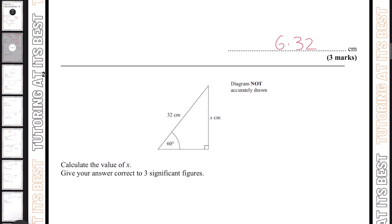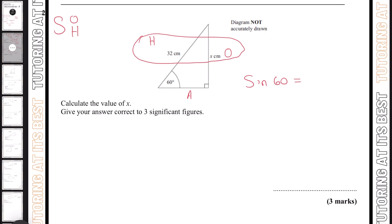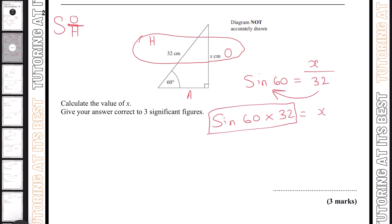Let's dive into question two. We need to calculate the value of x again. So let's label our sides: we've got our hypotenuse, our opposite, and our adjacent. We need the value of x and we have the hypotenuse already, so that's H and O — which is SOH. We write sin 60 equals O divided by H, which is x over 32. We then take 32 over: sin 60 multiplied by 32 gives us x. Putting this into your calculator, x equals 27.7 centimetres.